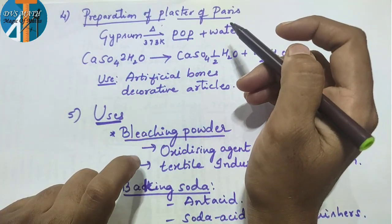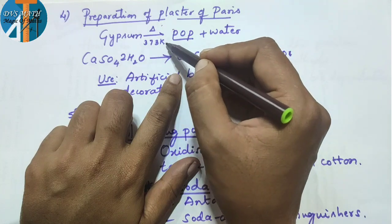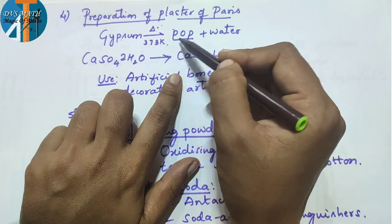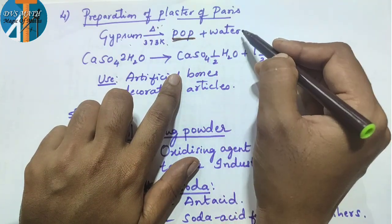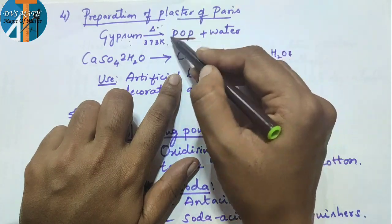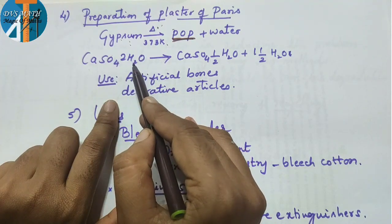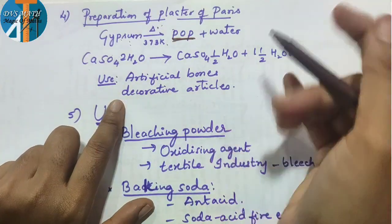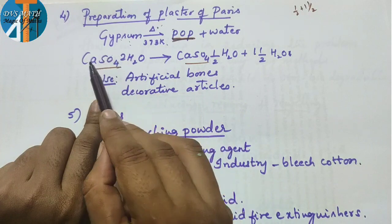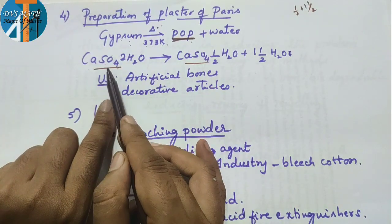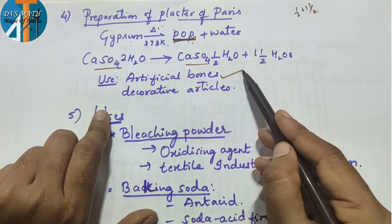Preparation of plaster of paris: gypsum when heated at 373 kelvin gives plaster of paris plus water. Chemical equation: CaSO₄·2H₂O → CaSO₄·½H₂O + 1½H₂O. Uses of plaster of paris include making artificial bones and decoration articles.